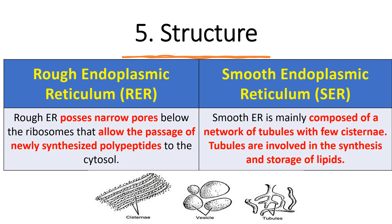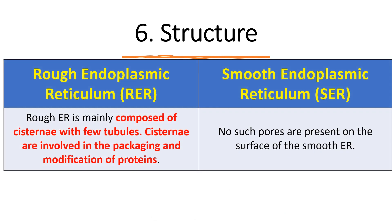In smooth endoplasmic reticulum, because it does not synthesize proteins, it is mainly composed of networks of tubules with few cisternae. The three types of structures in the endoplasmic reticulum are: cisternae (tubular structures), vesicles (storage-like), and tubules. In smooth ER you see few cisternae and more tubules involved in lipid synthesis and storage, whereas in rough ER you mainly see cisternae and fewer tubules.